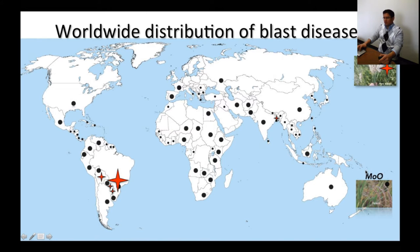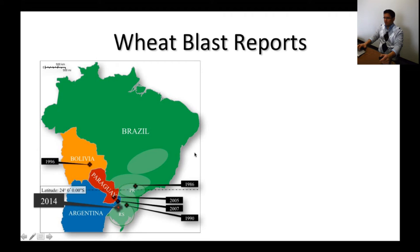Regarding rice blast, we use the term MO-O, which stands for Magnaporthe oryzae oryzae, and MOT stands for Magnaporthe oryzae triticum. The rice blast disease has been reported in different countries around the world. This is an important point because these two diseases are very similar, especially in the conditions they require for establishment and spread, so we have to be aware of that.